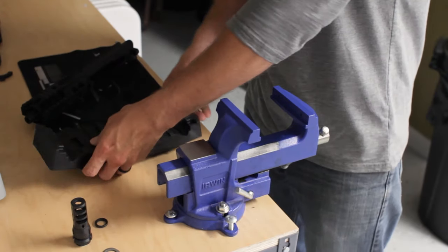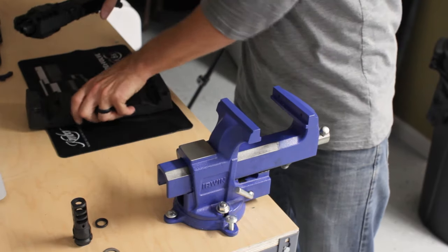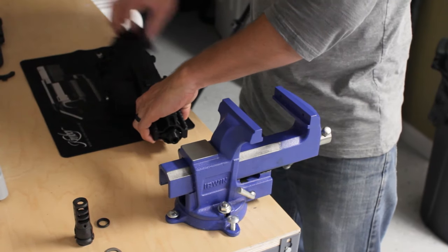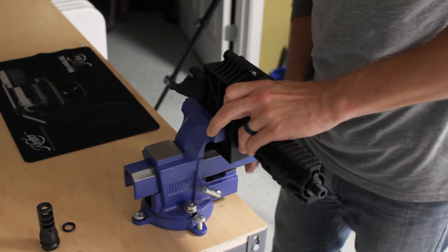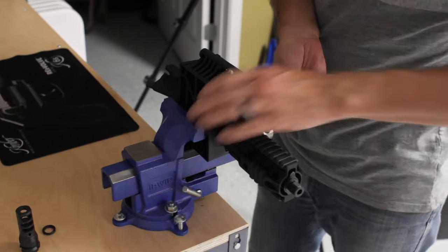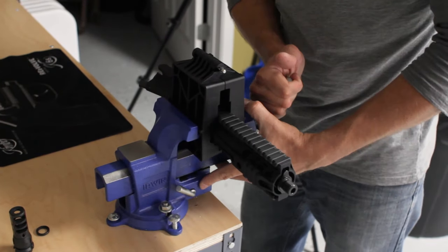And now we can head over to the workbench with our vise and get this thing clamped down. Now we're going to take our upper receiver block and we're going to put our upper receiver in there and mount this in the vise, make sure that it's in there pretty secure.